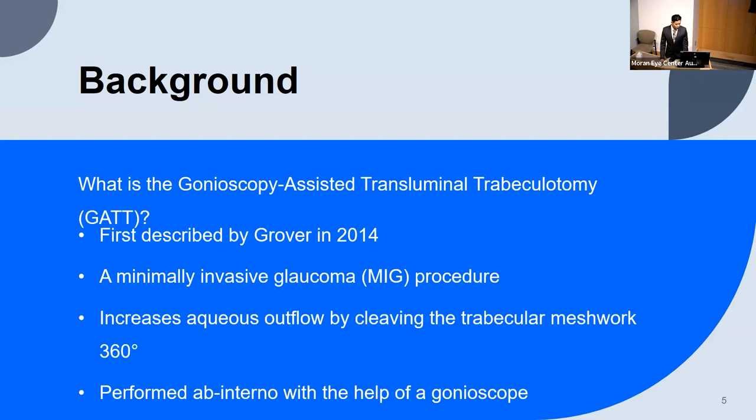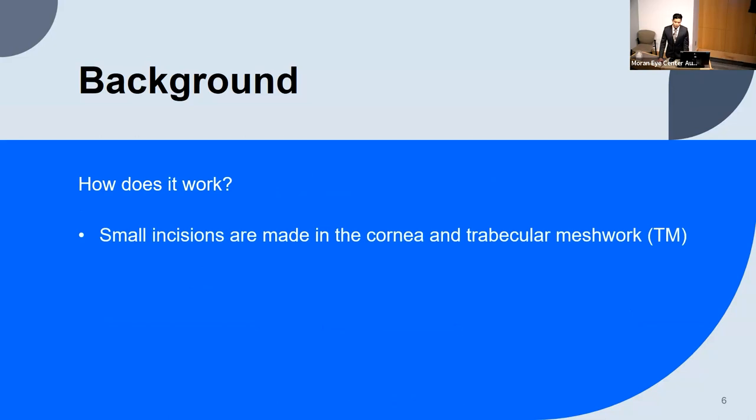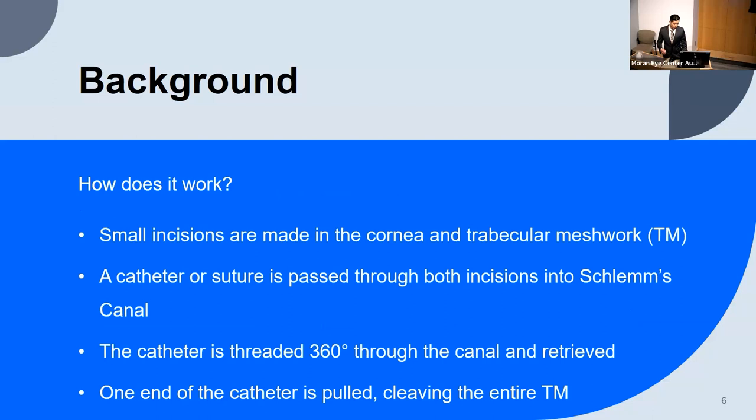The ab interno approach is done with the help of a gonioscope — hence its name. How does the procedure work? We first make small incisions in the cornea and in the trabecular meshwork. Then a suture or catheter is threaded into the anterior chamber through that incision, into Schlemm's canal, threaded all the way around, and then grasped with micro forceps — which pulls and cleaves the trabecular meshwork.